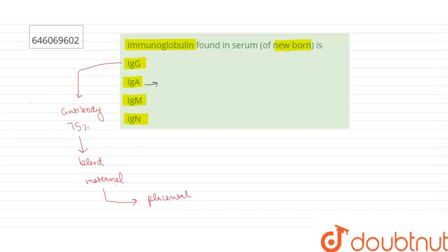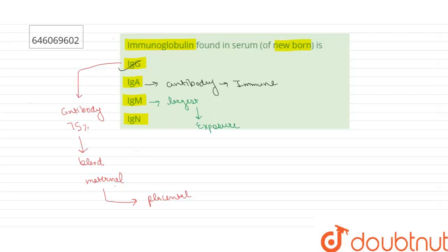Option number two, immunoglobulin A, is the antibody that plays a crucial role in the immune function of mucous membranes. Immunoglobulin M is the largest antibody and the first antibody to appear in response to initial exposure to an antigen. So the correct answer to our question is option number one.